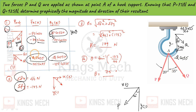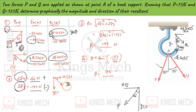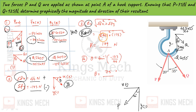Summation of Fx and summation of Fy are computed. The resultant lies around the 4th quadrant. R equals square root of (ΣFx² + ΣFy²). The values are approximately 46 for ΣFx and 173 for ΣFy, which is negative. So the resultant R is approximately 179.